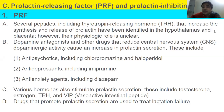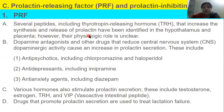The first topic is prolactin releasing factor, PRF. Several peptides including thyrotropin releasing hormone — TRH — that increase the synthesis and release of prolactin have been identified in the hypothalamus and placenta, however their physiological role is still unclear. Dopamine antagonists and other drugs that reduce CNS dopaminergic activity cause an increase in prolactin secretion.